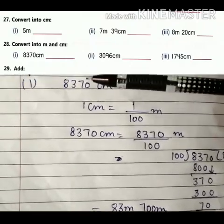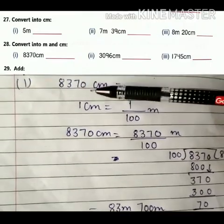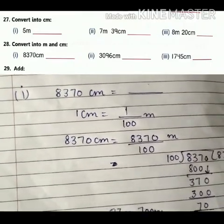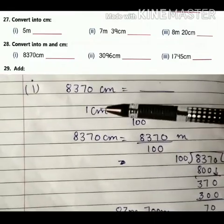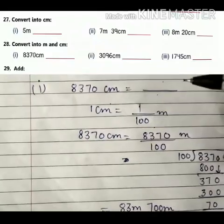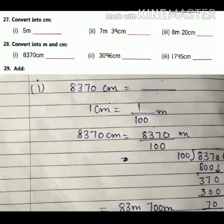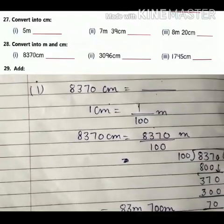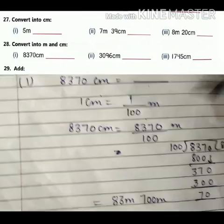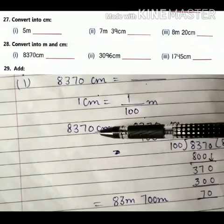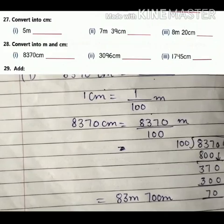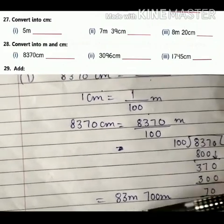The next question 28: convert into meters and centimeters. First part: you have 8370 centimeters and you have to convert to meters and centimeters. As we know, 1 centimeter is equal to 1 by 100 meter because 1 meter is equal to 100 centimeters. So to change to meters, it is the reverse process.